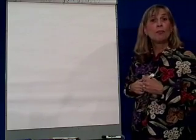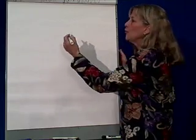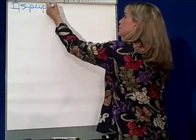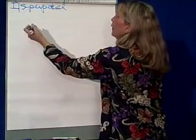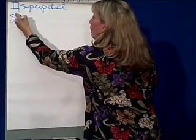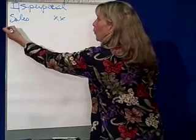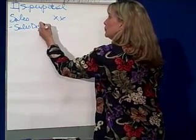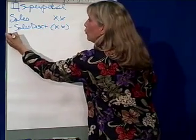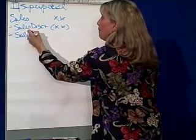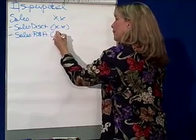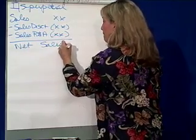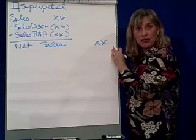Let's start with the perpetual income statement. Under the perpetual income statement, you are going to have sales for a certain amount. We know that we subtract sales discounts, and we subtract sales returns and allowances, to come up with what we call net sales — that's what we truly sold.